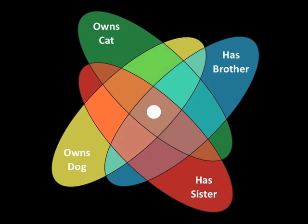What about this one? Give this diagram to your students and get them to ponder — is there a problem with this? There's certainly no problem if you own a cat, own a dog, have a brother and have a sister. But what happens if you own a dog and have a brother? One child might say, 'Wait a second, there are two places I can write my name.' So there's another criteria your children might identify: there should be one and only one place for them to write their name.